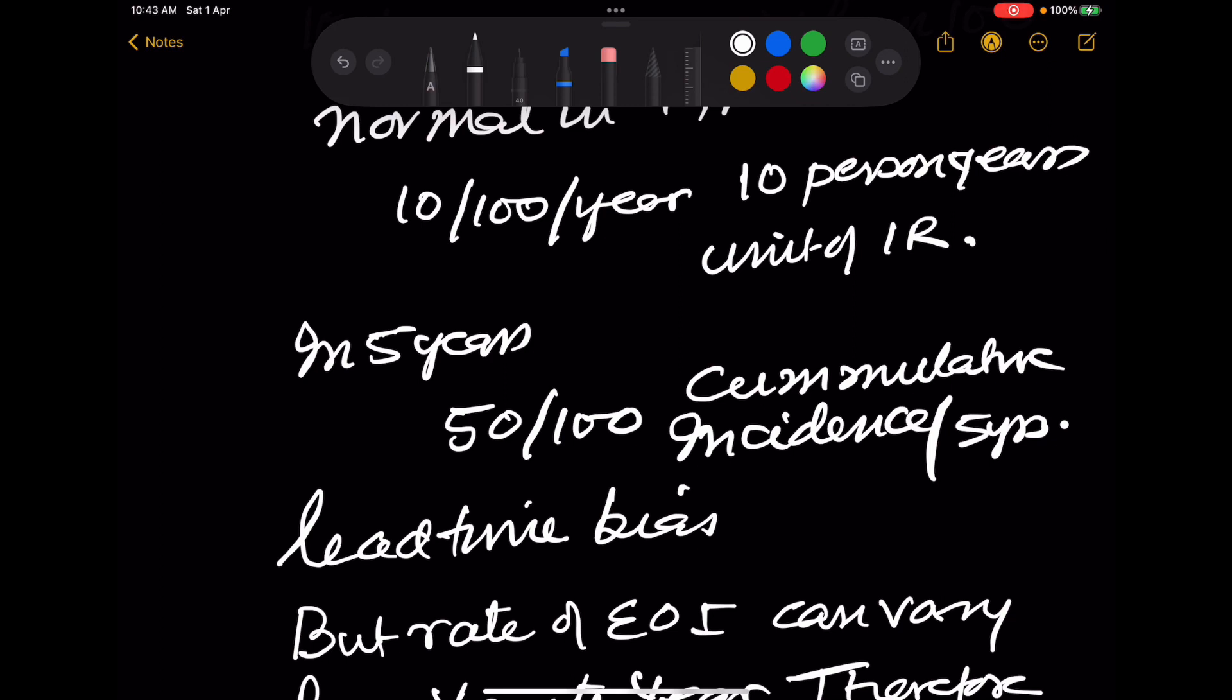In 5 years, if there is no attrition, there will be 50 upon 100. This is called cumulative incidence. Let us say cumulative incidence over 5 years.